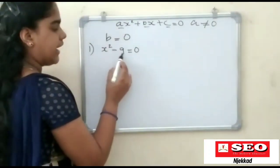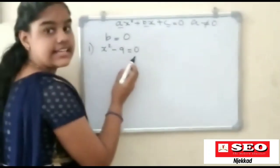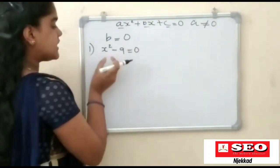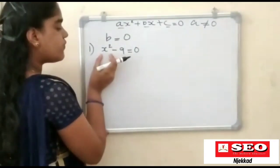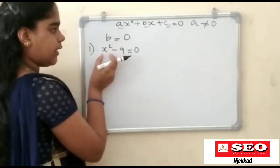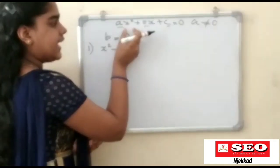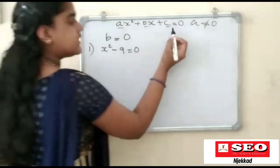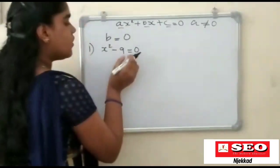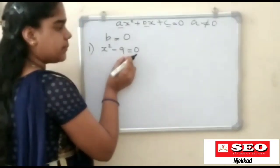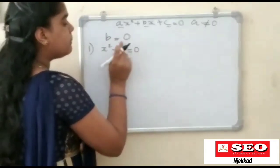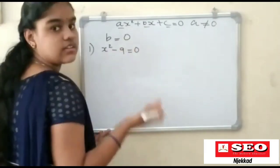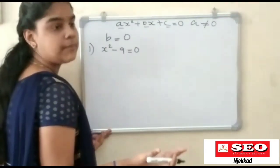x squared minus 9, which is 3 squared, equals zero. If you want to see how an equation has one x squared, we can apply the standard form. If you start from the standard of 9x and want to see how three are equal to zero.